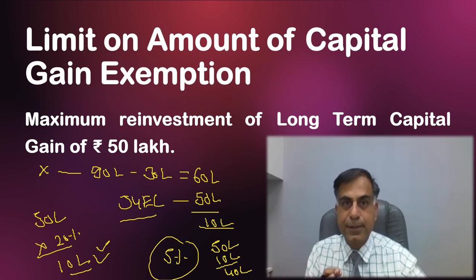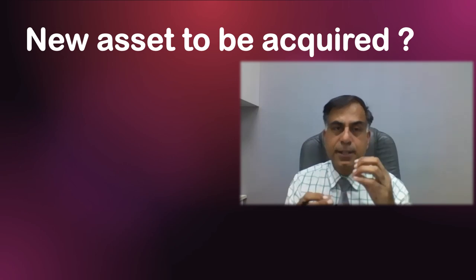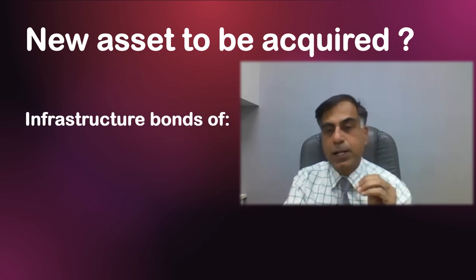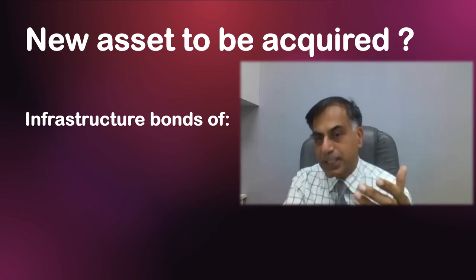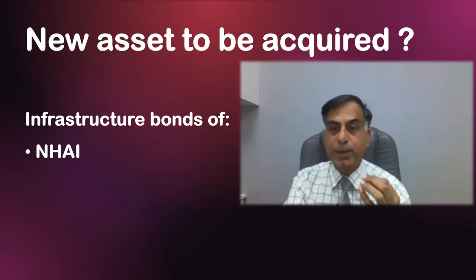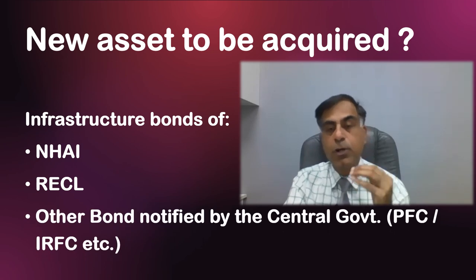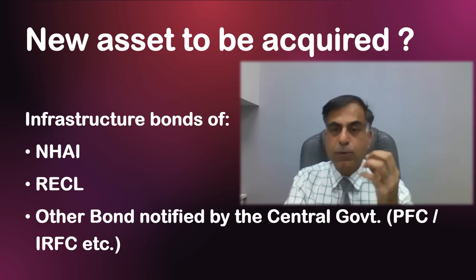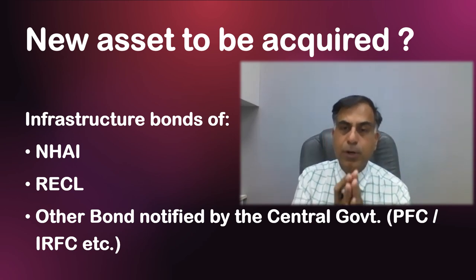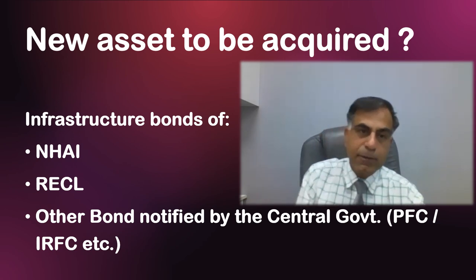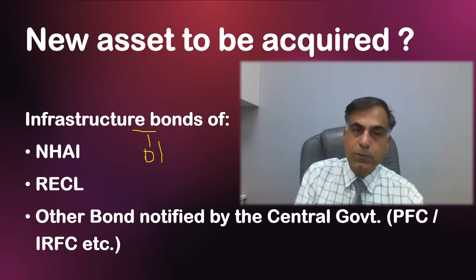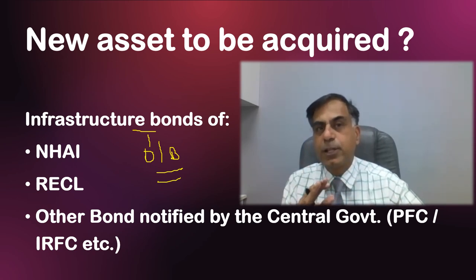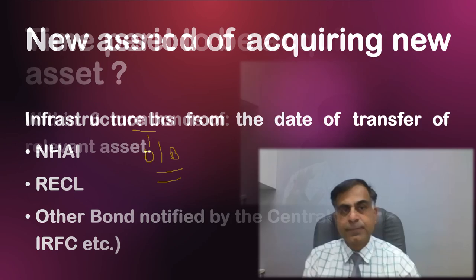What are the new assets required to be acquired under Section 54EC? They are called infrastructure bonds, because the amount invested is used by infrastructure sector companies or PSUs — such as NHAI (National Highway Authority of India) bonds, Rural Electrification Corporation bonds, Power Finance Corporation, Indian Railway Finance Corporation, or other bonds notified by the Government of India for the purposes of this section. These bonds may be purchased directly or through a broker — the choice is of the assessee — however, there is no difference in the interest rate whether purchased directly or through a broker.